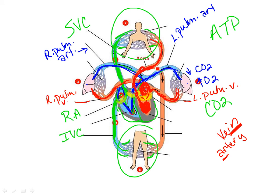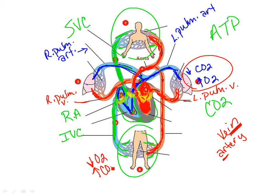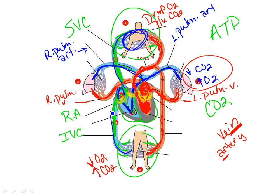Part of that blood will go down through the descending aorta to the areas below the heart. Now what happens when we get out there? Just the opposite of what happened in the lungs — we've got oxygenated blood going out to these areas, so we drop oxygen and pick up CO2. Once we do that, we've got deoxygenated blood and we start this whole pathway over. That deoxygenated blood then returns back to the right atrium.